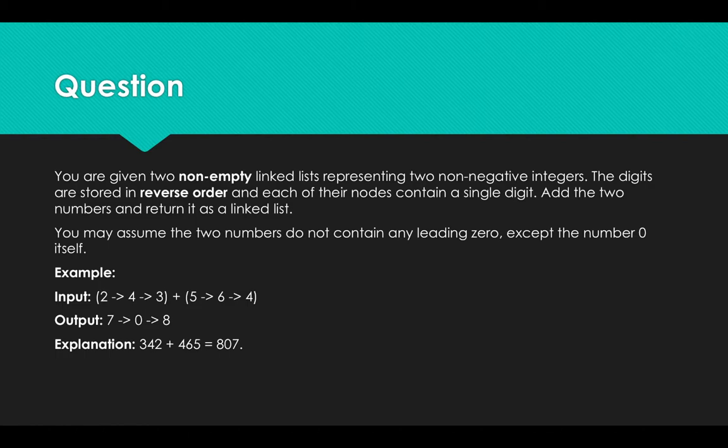For example, the input: the first linked list is 2, 4, 3, and the second linked list is 5, 6, 4. Adding two linked lists together, the output should be 7, 0, 8. The explanation is the first linked list represents 342, and the second linked list represents 465. So the result is 807.